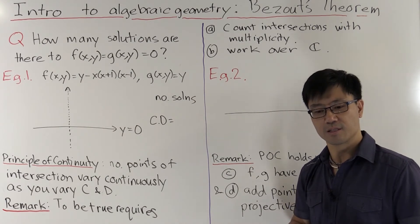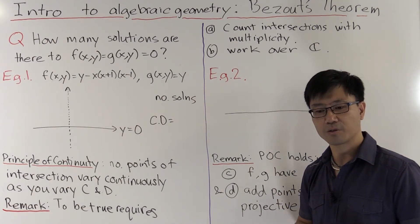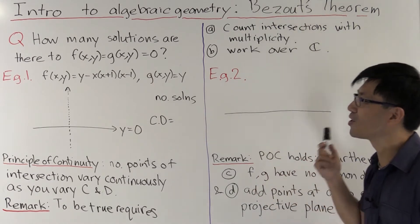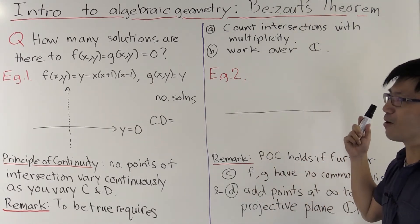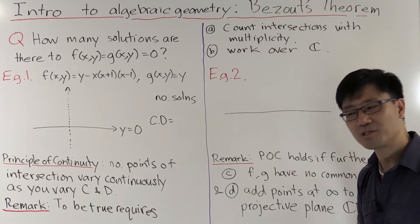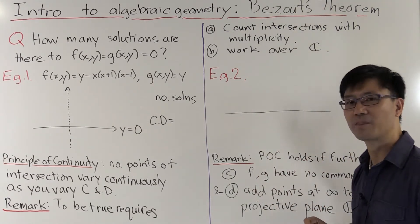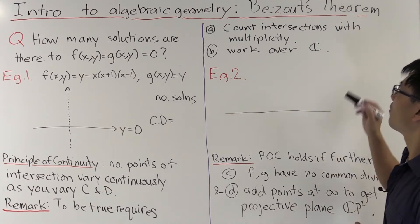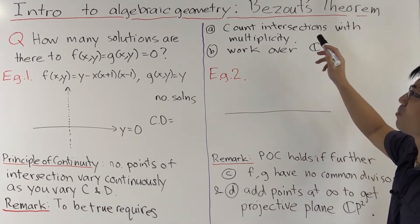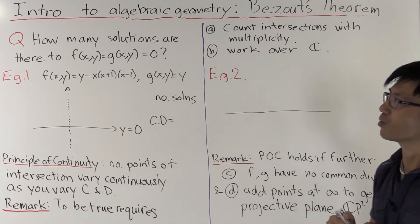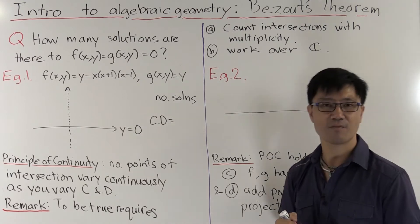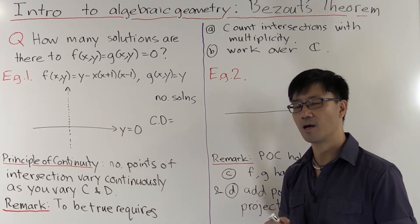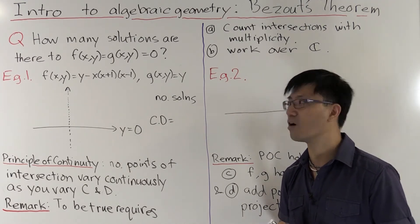This is a very, very old theorem, and it's so old that we're not quite sure who first realized that it was true. Certainly, Newton thought about this problem quite a bit. However, the credit goes to Bezout because it was in his 1779 PhD thesis at the University of Paris.